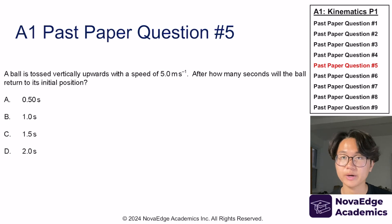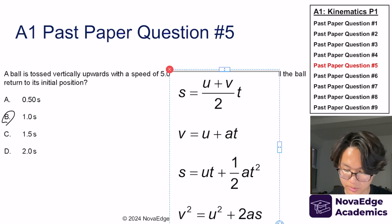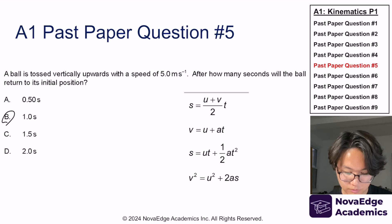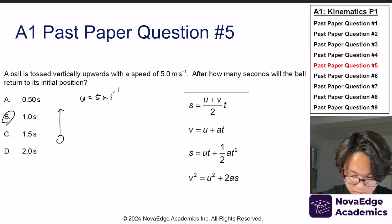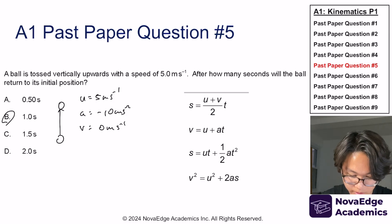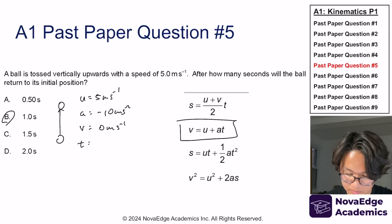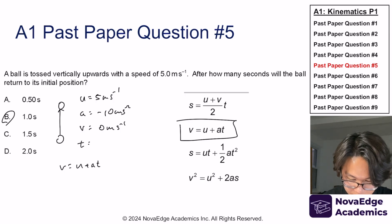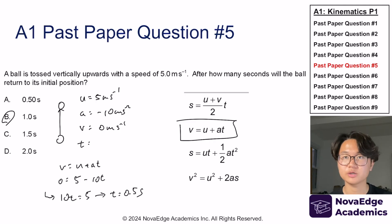Now let's try topic A1 past paper question 5. If you answered B, you are absolutely right. Again, we use SUVAT. If the ball is tossed with a velocity of 5 meters per second, U equals 5 meters per second, acceleration is negative 10 meters per second squared, and the final velocity is 0 at the top. Using v equals u plus at, t equals 0.5 seconds to reach the top.